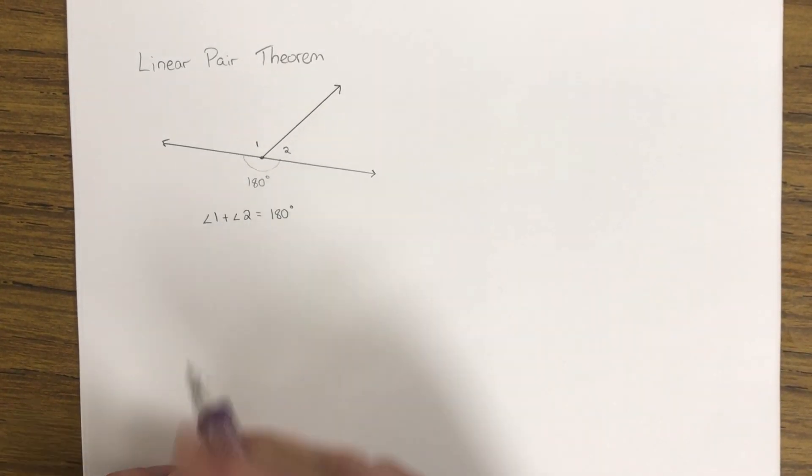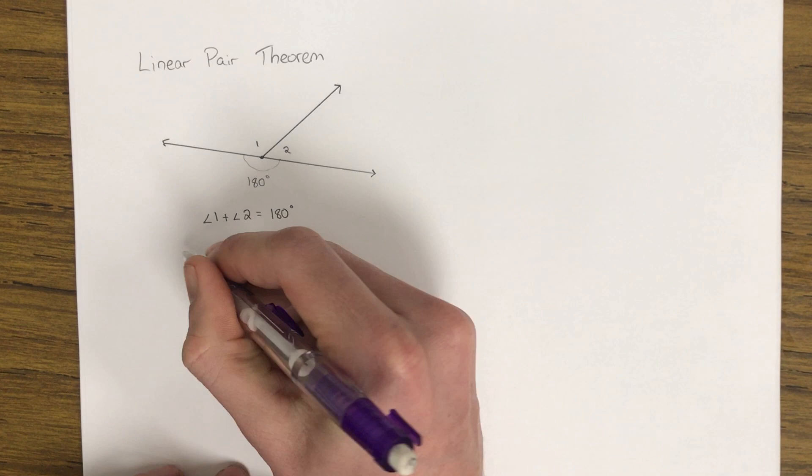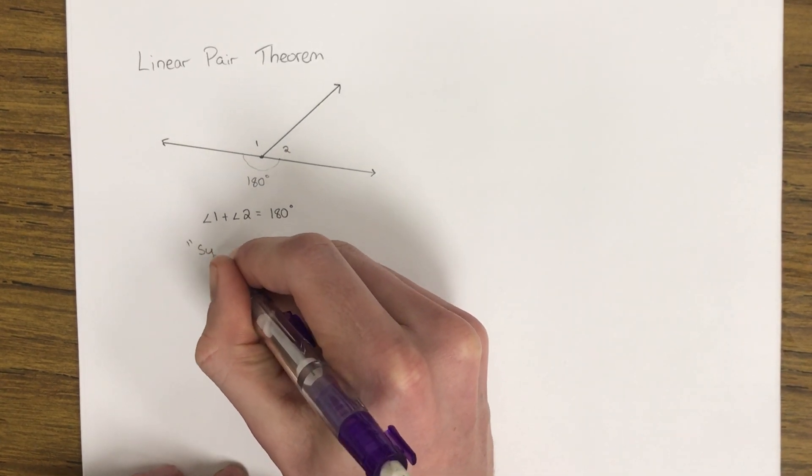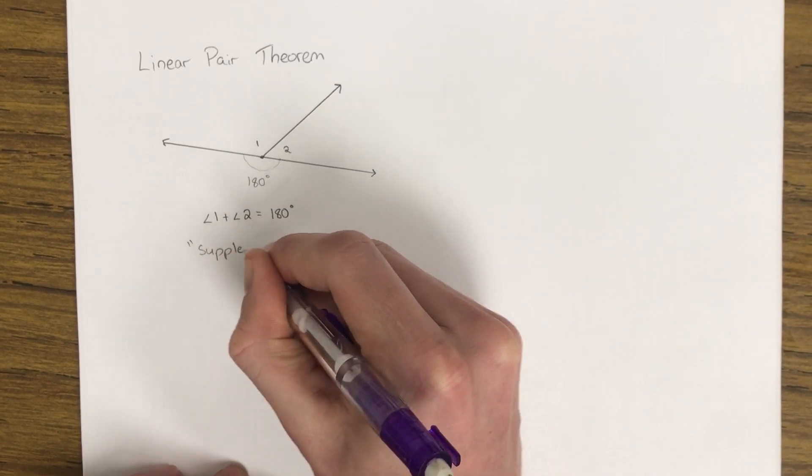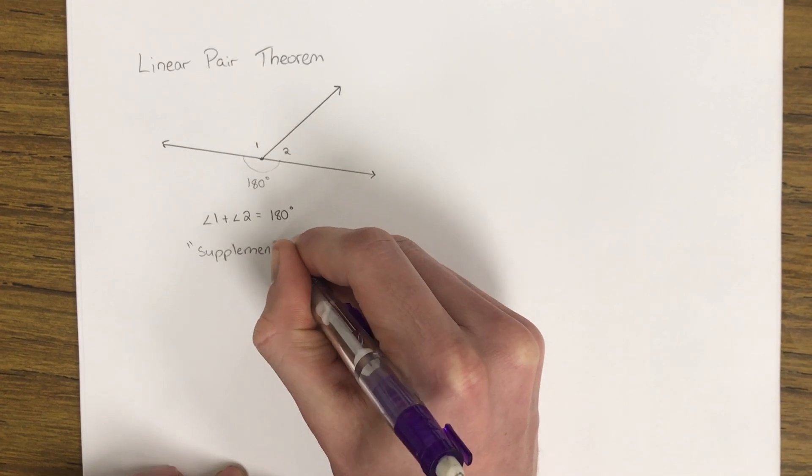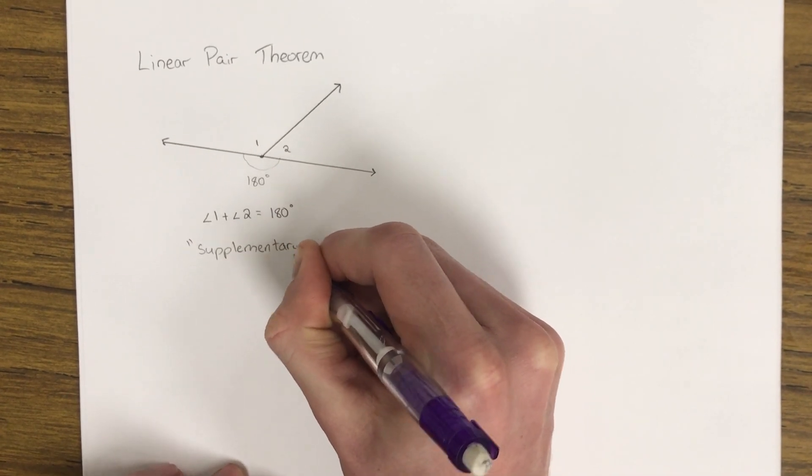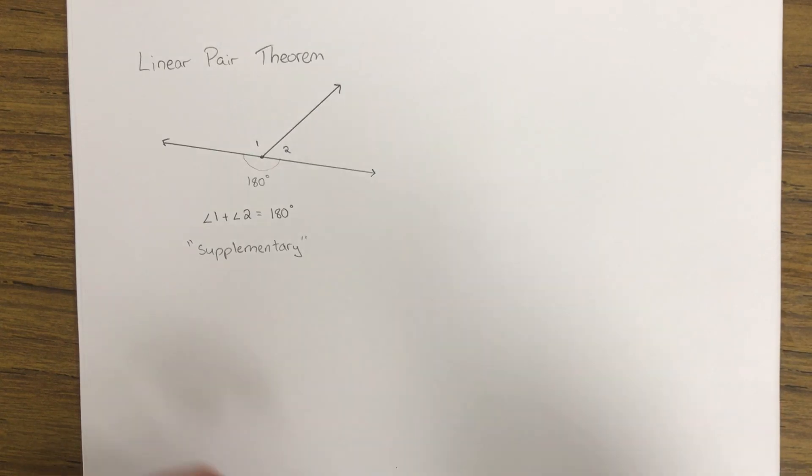If two or more things add up to be 180 degrees, we say they are supplementary. So a linear pair of angles are supplementary to each other, they add up to be 180 degrees.